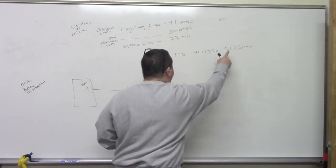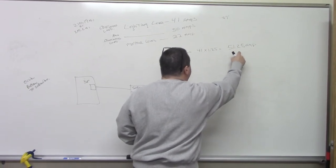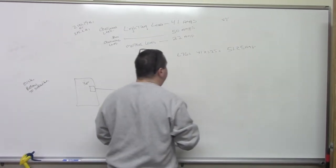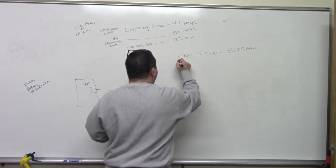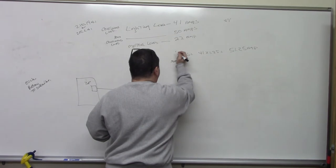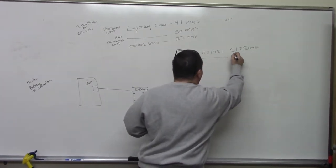So this is the real number now, 51.25. So you make sure your conductor is based on this, not the 41, okay? Then we have a continuous load, non-continuous, non-continuous at 50 amps.